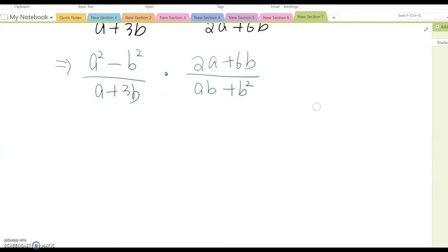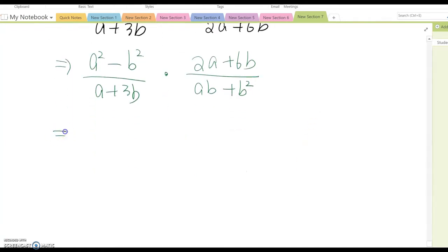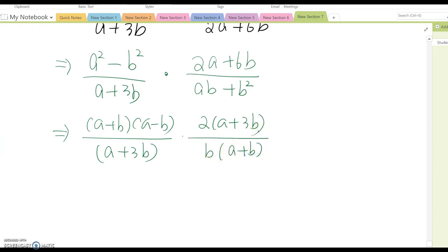Now you see everything is binomial, so you have factoring. Then it becomes (a + b)(a - b) over (a + 3b), multiply 2(a + 3b) over b(a + b). Cancel all the common factors. Then the answer becomes 2(a - b) over b.